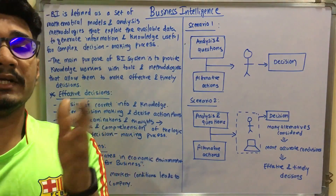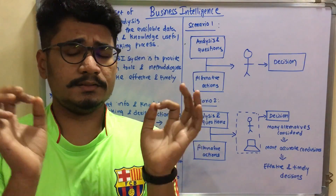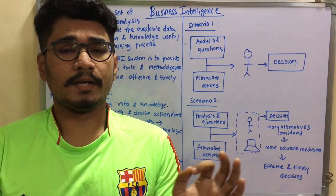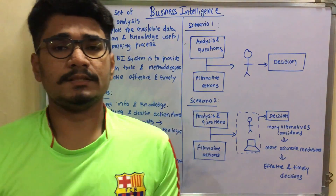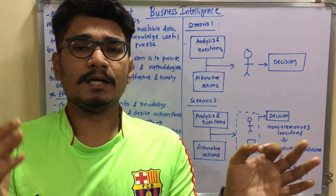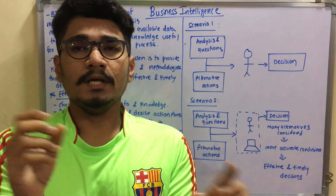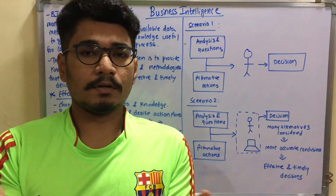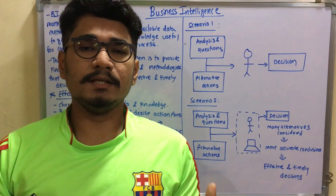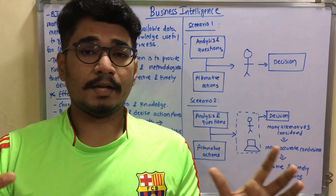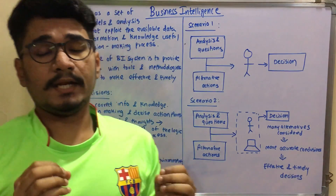Let me explain data, information, and knowledge with the example of the number 23. The number 23 is just data — it doesn't give you much idea on its own. It's just two digits, two and three. It could be someone's age, a room number, a floor number, or just a number somewhere. You don't have a broader level of abstraction regarding what 23 actually means.